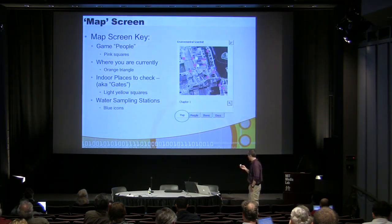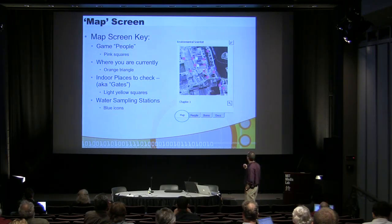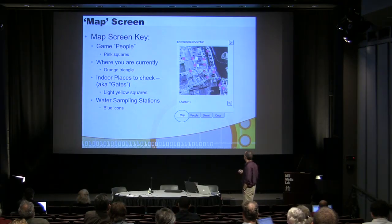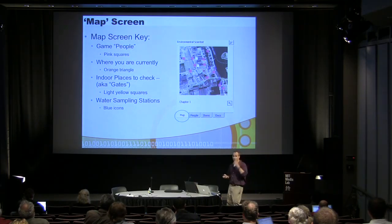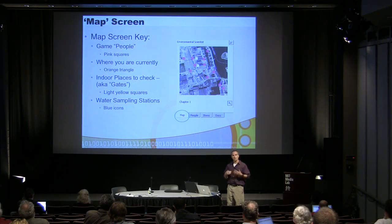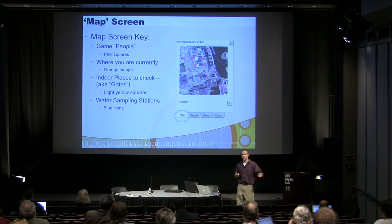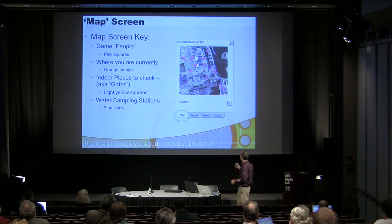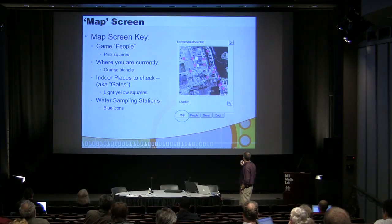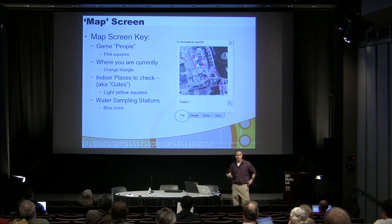Here's what it looks like. They have a screen where their location is given by a little orange dot, and as they move around, that moves with them. There are pink things — these are virtual characters they can interview. Some may be witnesses who tell you something they saw; others may be experts on particular topics and might give you documents. There are also blue water sampling stations.